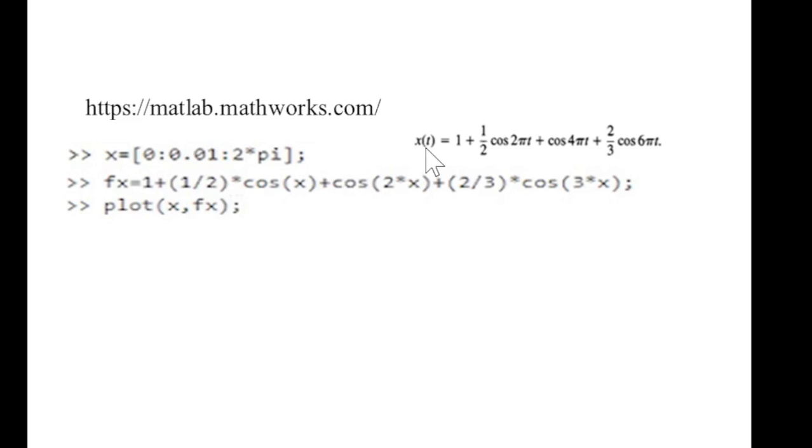This is the program that I have written. x is the angle and it is going from 0 to 2π, that is the time period. Then f(x), which is x(t), we are writing as f(x): 1 plus 1 over 2 cosine x plus cosine 2x. Then finally we give command plot x, fx, and this is what we get.